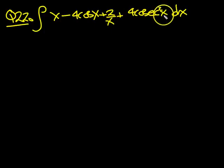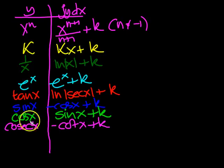Cosec x is 1 over sin. It's a standard integral, so I've put it on the table for us. The integral of cosec squared x is minus cot x plus k.